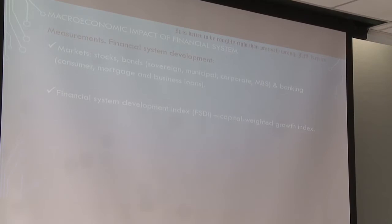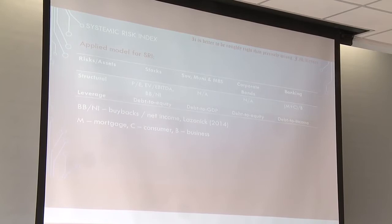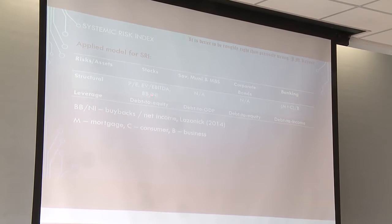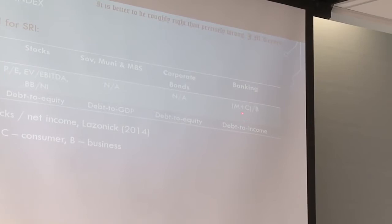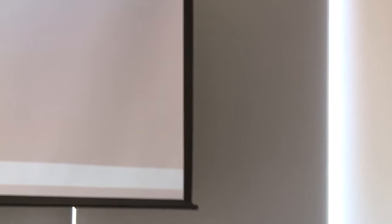My systemic risk index has two components: structural risk and leverage risk. Leverage risk uses standard indicators across all markets — debt to equity, debt to GDP, debt to income. Structural risk uses fundamental indicators for the stock market and a ratio of non-productive loans to productive loans — specifically, the ratio of mortgage and consumer loans to business loans. These are simple indicators from which you can get quite a lot.